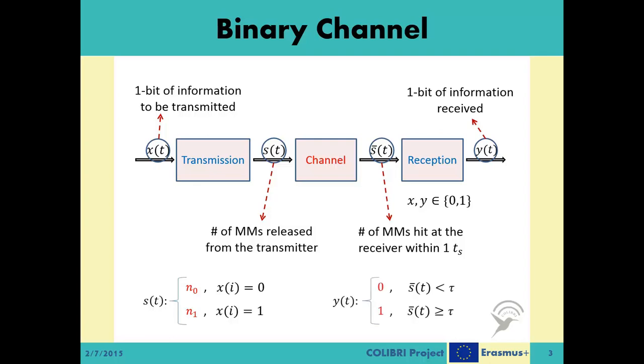If this value, the S̄t, is below a given threshold tau, the received information is translated as 0. If S̄t exceeds the same threshold, the receiver then decides that the transmitted message is carrying the bit value of 1.